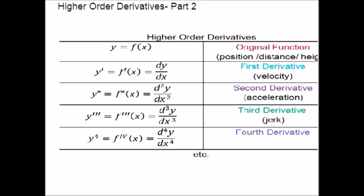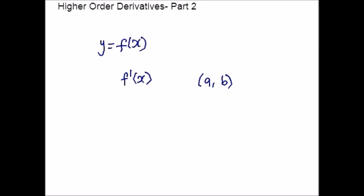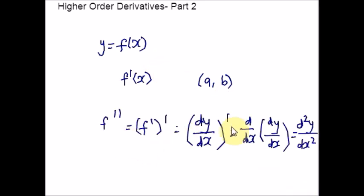Let the function y = f(x) have a finite derivative f'(x) in a certain interval (a, b). That is, the derivative f'(x) is also a function in this interval. If this function is differentiable, we can find the second derivative of the original function y = f(x), which is denoted by various notations: f'', f'', dy/dx of dash, dy/dx of dy/dx, and d²y/dx².